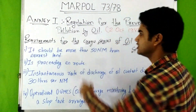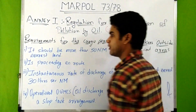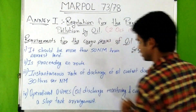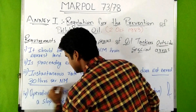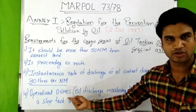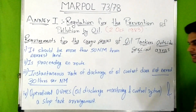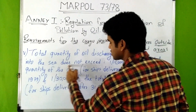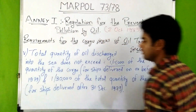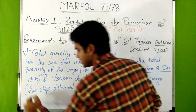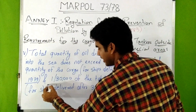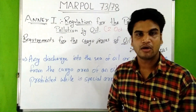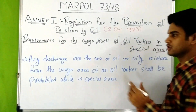Requirements for cargo spaces of oil tankers outside special areas: the vessel must be more than 50 nautical miles from the nearest land; it must be proceeding en route; the instantaneous rate of discharge must not exceed 30 liters per nautical mile; operational ODMCS (Oil Discharge Monitoring and Control System) and slope tank arrangements must be in place; and total quantity of oil discharged must not exceed 1/15,000 of total cargo for ships delivered on or before 31st December 1979, or 1/30,000 for ships delivered after 31st December 1979.